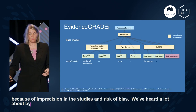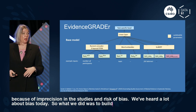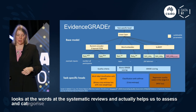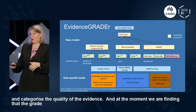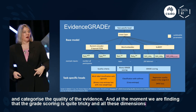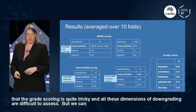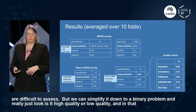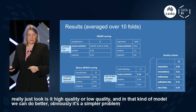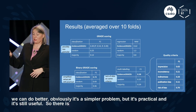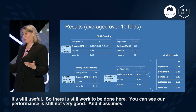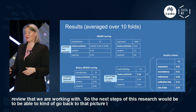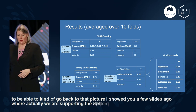We built a deep learning model that looks at words in systematic reviews to assess and categorize evidence quality. Full GRADE scoring is quite tricky and all dimensions of downgrading are difficult to assess, but we can simplify it to a binary problem — high quality or low quality — which performs better. Our performance is still not great and requires a systematic review as input, so next steps would be to support the systematic review process more directly.